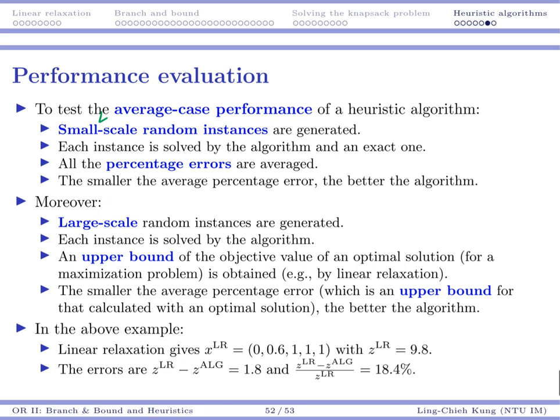People are going to find an upper bound. For a maximization problem, people try to find an upper bound of the objective value of an optimal solution. So an optimal solution cannot be found, but we may find its upper bound through what? For example, linear relaxation.